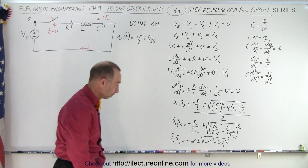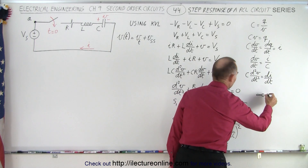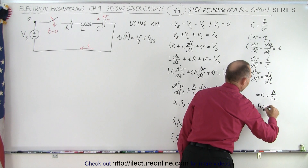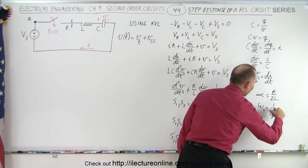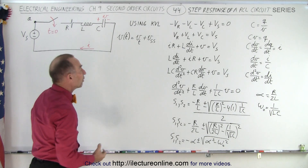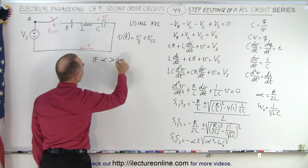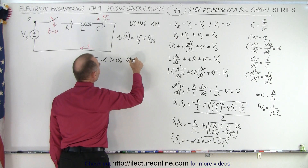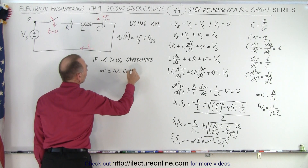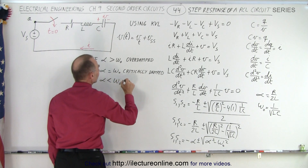This is the natural frequency of the circuit. We have the same format as before, with one difference: alpha in this case is R over 2L, and omega-naught is still equal to 1 over the square root of L times C. If alpha is larger than omega-naught, we end up with an over-damped case. If alpha equals omega-naught, we have a critically-damped case. And if alpha is less than omega-naught, we end up with an under-damped case.